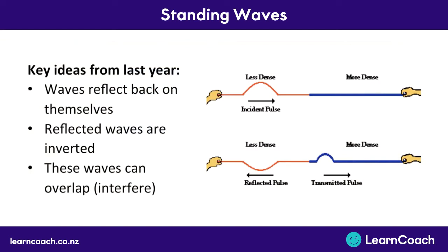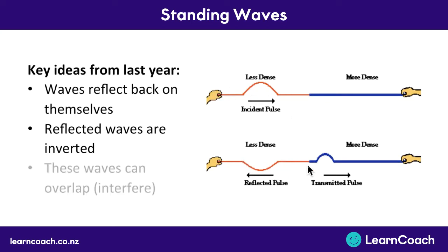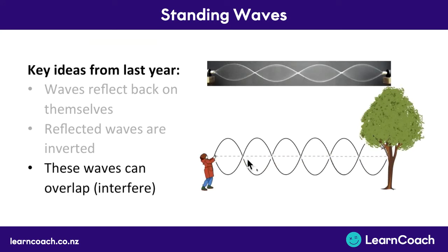Welcome to this video on standing waves. We're going to start by covering a few key points from last year. If you have a light rope you can create a wave that flicks down towards the other end. If it's connected to a more dense medium like a heavier rope or attached to a wall, that wave is going to hit the end and bounce back as an inverted wave. The incoming wave interferes constructively or destructively with the reflected wave coming back, and they can create what we call a standing wave.